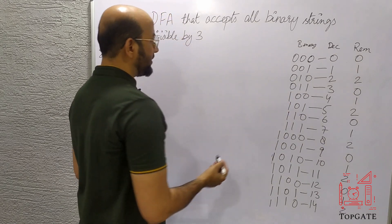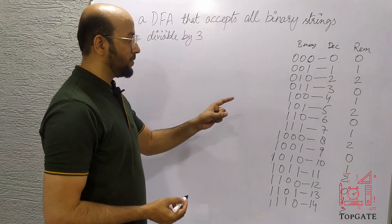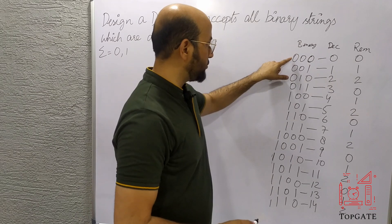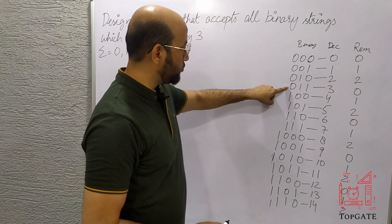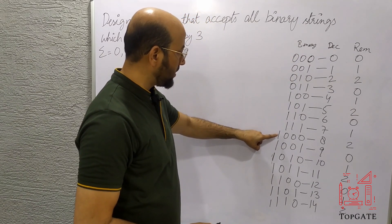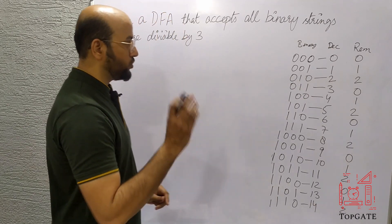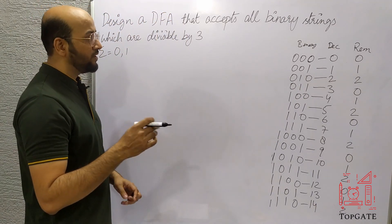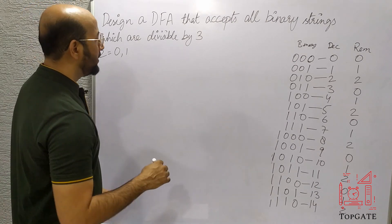We should accept only those numbers in which the remainder is 0. So we accept 0, 3, 6, 9, 12, 15 and so on — all numbers divisible by 3.